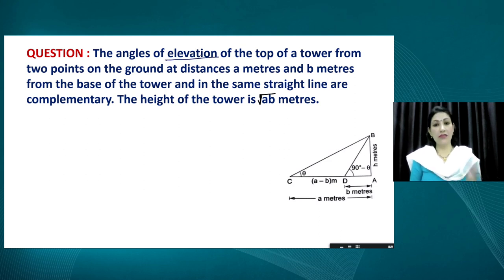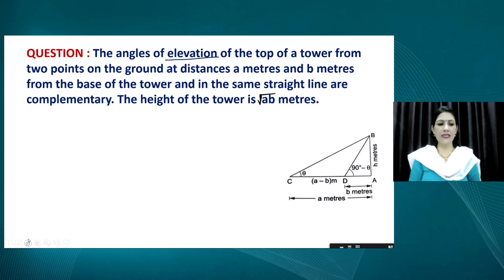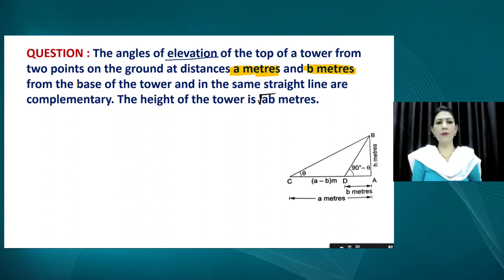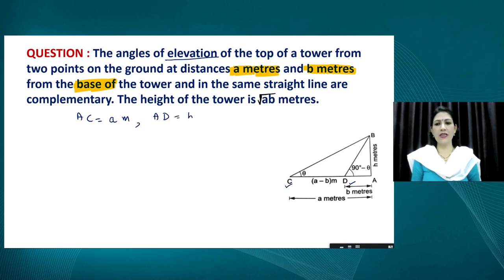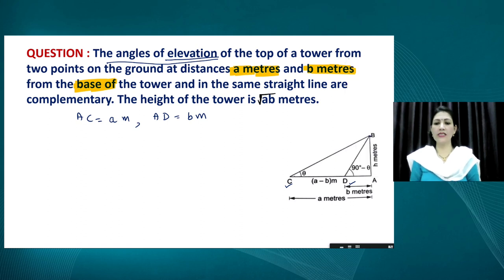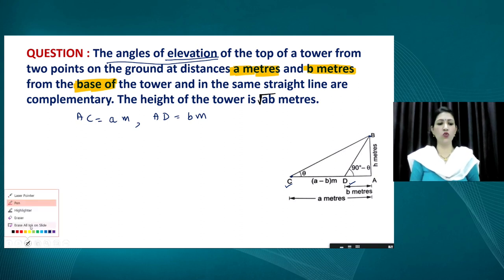Let us discuss the next question: the angle of elevation of the top of a tower from two points on the ground at distances A meter and B meter from the base of the tower. We take point D at distance B and point C at distance A. It is given that the angles of elevation from both these points are complementary — meaning their sum equals 90°.